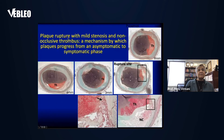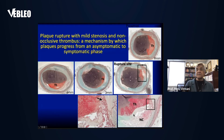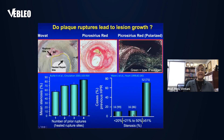Plaque rupture with mild stenosis can also occur, and non-occlusive thrombi can form. This is a mechanism by which plaques progress from an asymptomatic to symptomatic phase. You can see the site of rupture and overlying thrombus — this can heal and lead to narrowing of the lumen. Repeated events like this lead to progressive narrowing, and data show that narrowing is correlated with rupture sites.